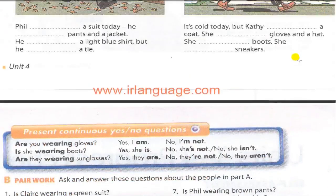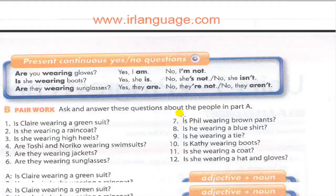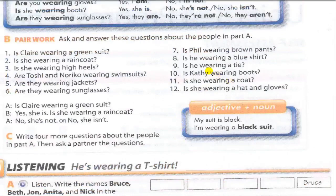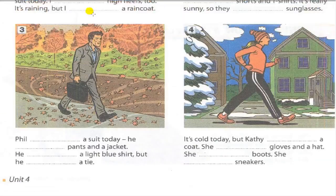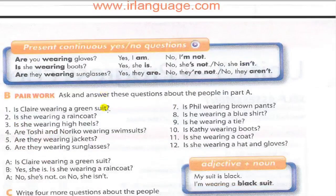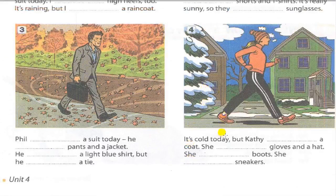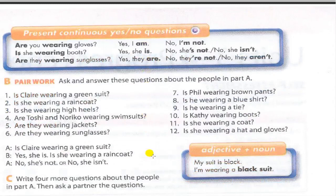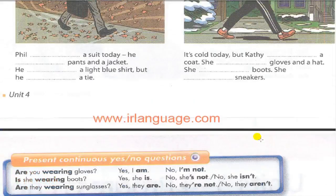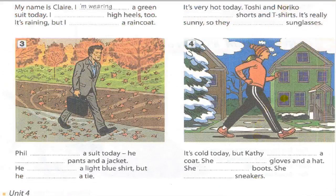Is Phil wearing brown pants? Is Phil wearing a tie? No, he's not — no, he isn't. Is he wearing a blue shirt? Yes, he is. Is Cassie wearing boots? No, she's not — she's wearing sneakers, trainers. Is she wearing a coat? No, she's not. Is she wearing a hat and gloves? No, she isn't.